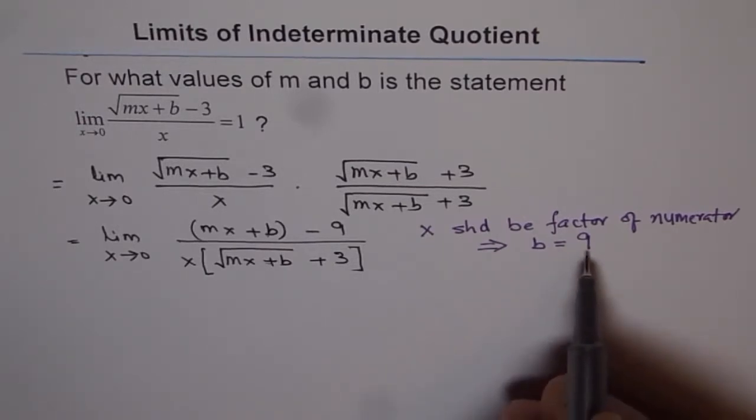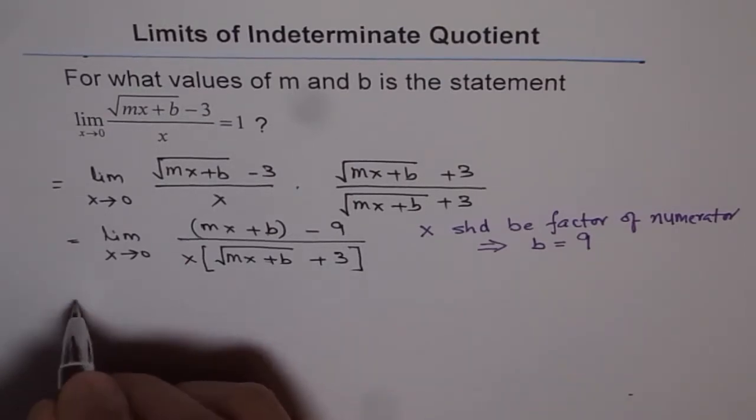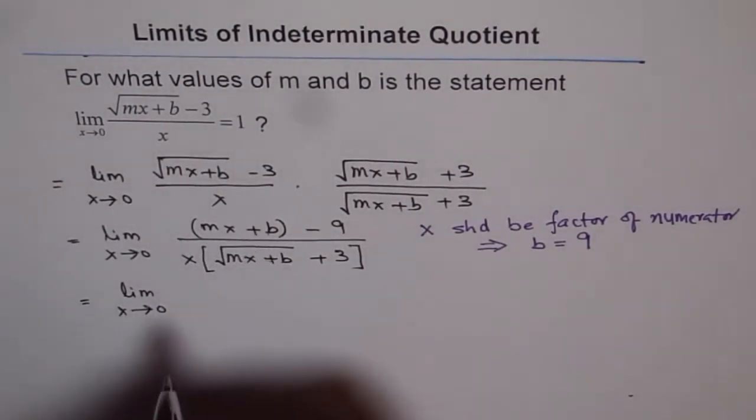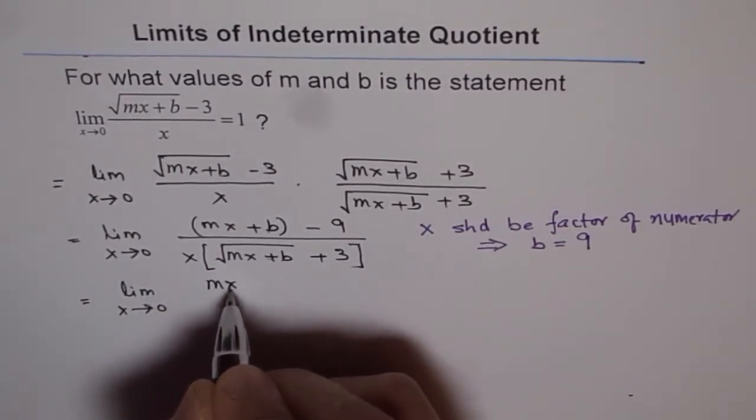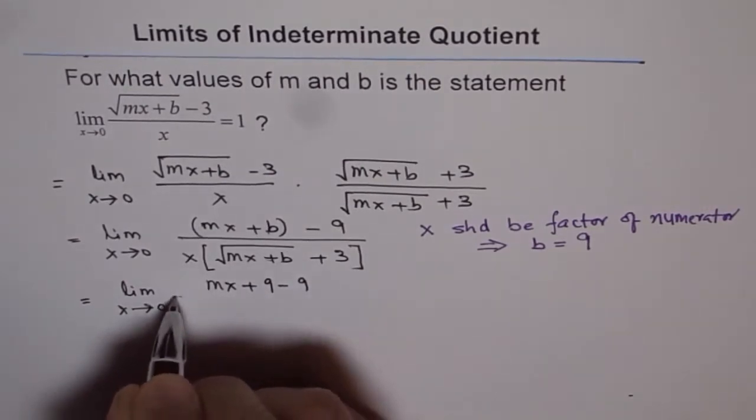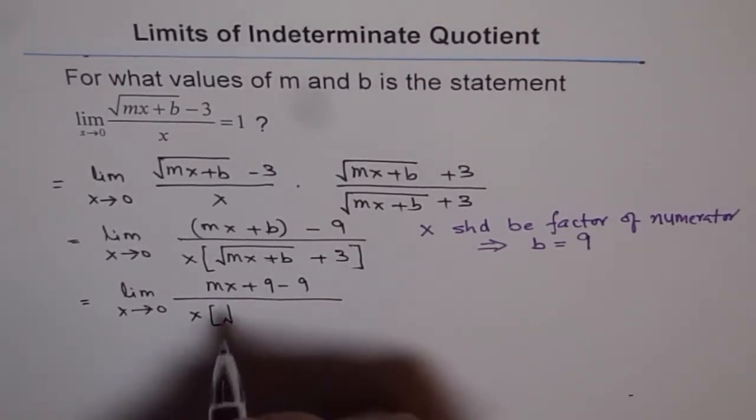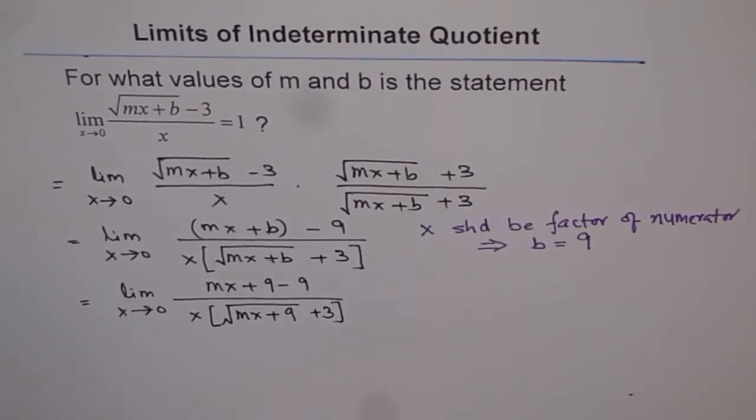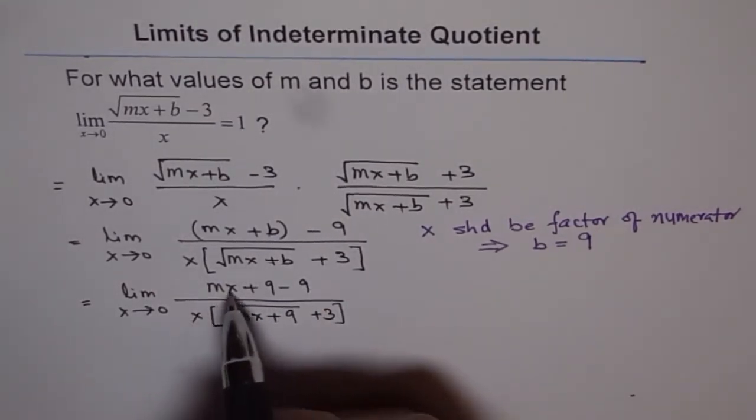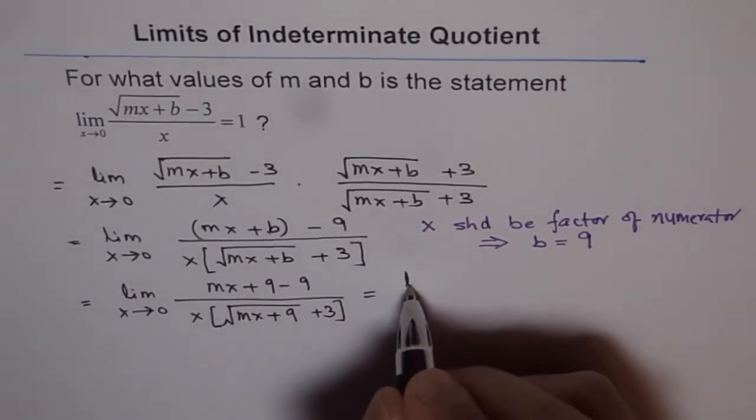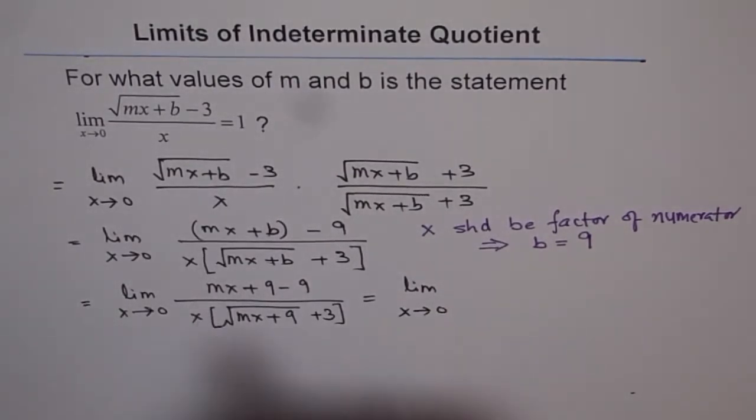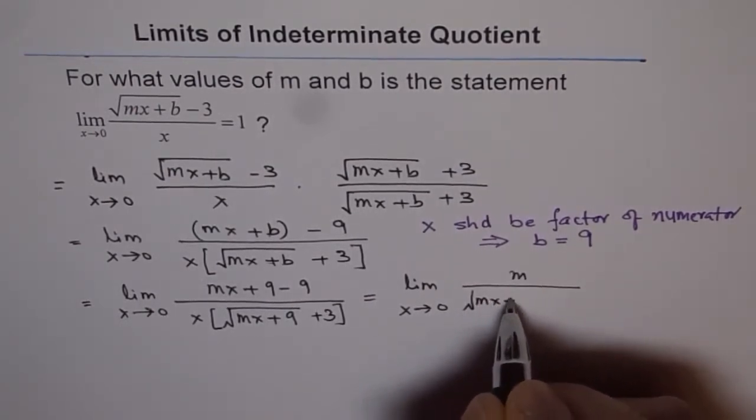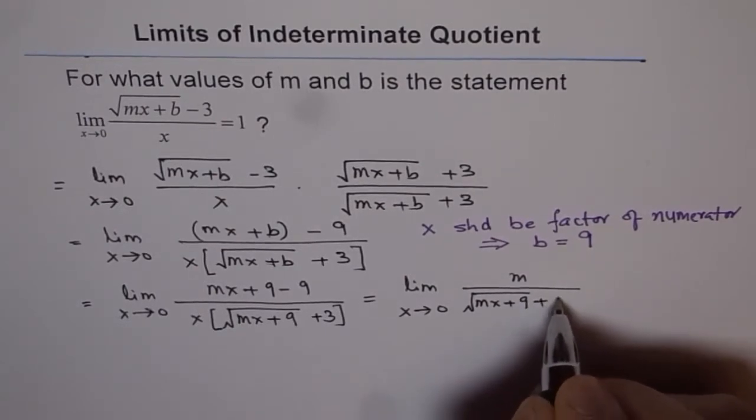Now, we'll substitute b as 9 and then continue with our solution. So if b is 9, then we have x approaching 0 for this function, and I'll write 9 now. See what happens when I write 9. If I write 9, I get mx plus 9 minus 9. So that is 0, over x times square root mx plus 9 plus 3. Now, since 9 minus 9 is 0, x and x cancel out, and so we get m over square root of mx plus 9 plus 3.